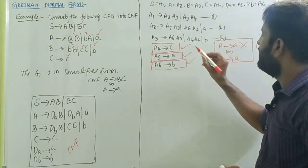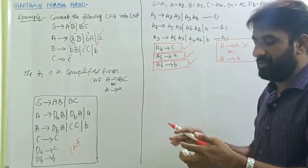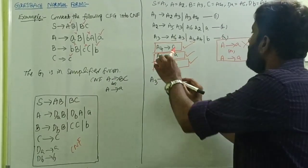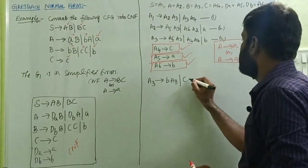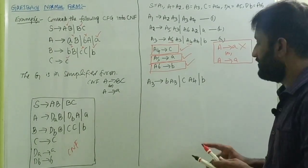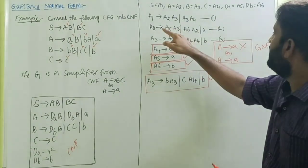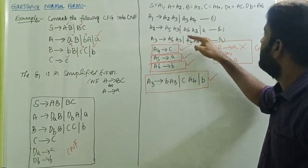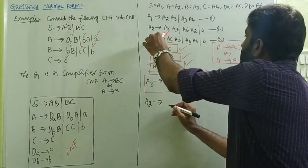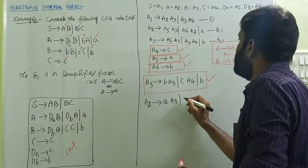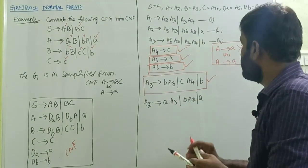Take equation three. Substitute A6 with b and A4 with c. A3 tends to b A3 A4 slash c A4 slash b — now A3 is converted into Greibach Normal Form. Then take equation two. Substitute A5 with a and A6 with b. A2 tends to a A3 slash b A2 slash a — this is also converted into Greibach Normal Form.